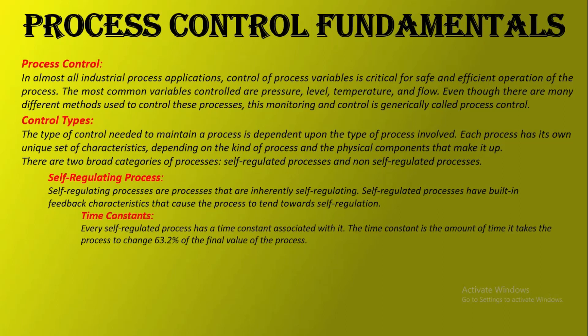In a self-regulating process, there is a time constant associated with it. The time constant is the amount of time it takes the process to change 63.2 percent of the final value of the process. In this example, if the process changes by 10 inches, the time it takes to change 6.32 inches — that is, 63.2 percent of 10 inches — is the time constant. It takes five time constants for the process to complete the total change.